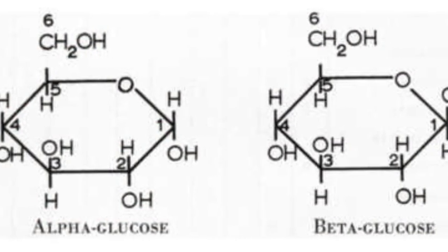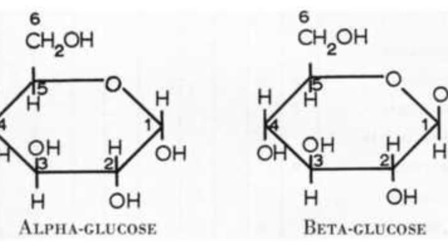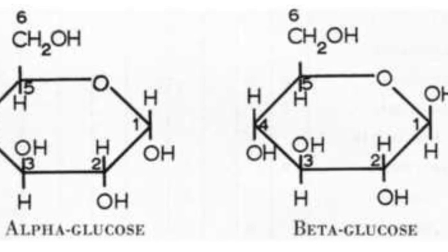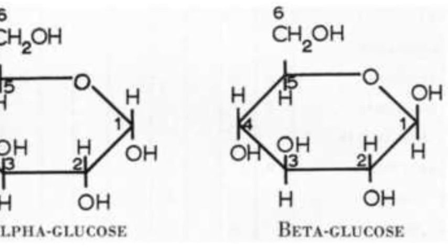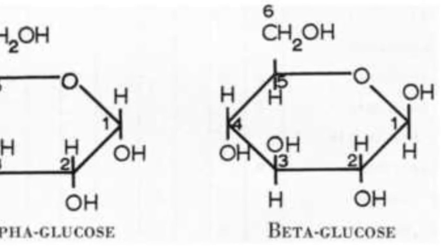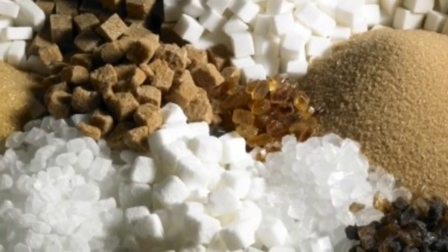The simplest carbohydrates are called monosaccharides. These are the monomers of carbohydrates. All larger carbohydrates are made by joining monosaccharides together. All monosaccharides are soluble in water, sweet-tasting, and form crystals.